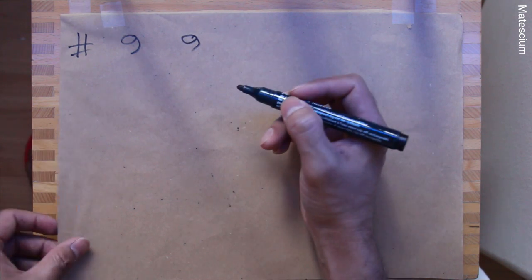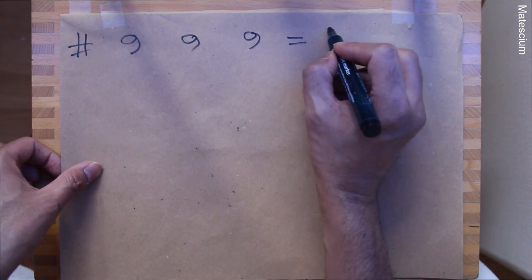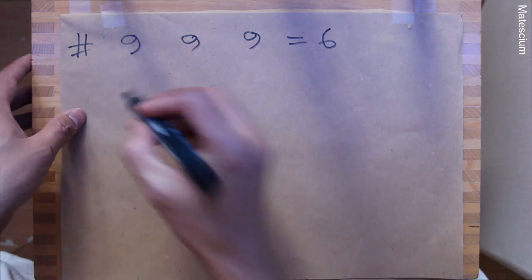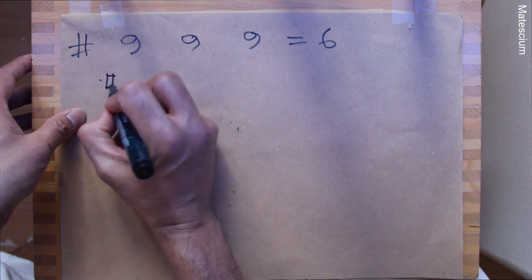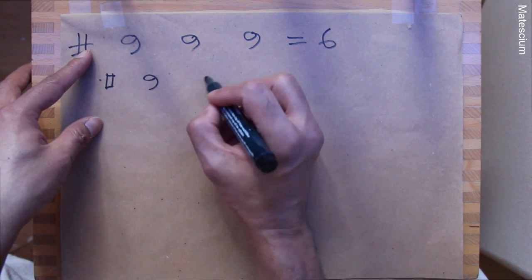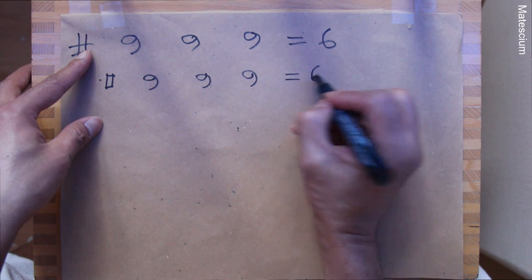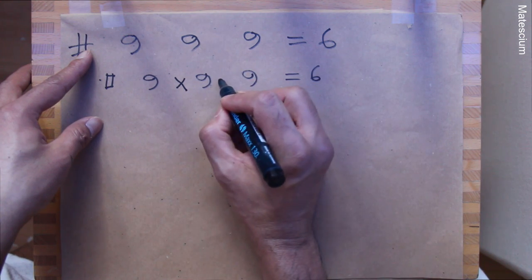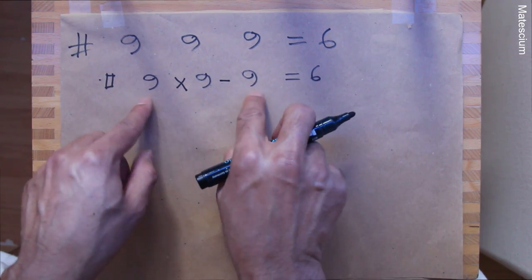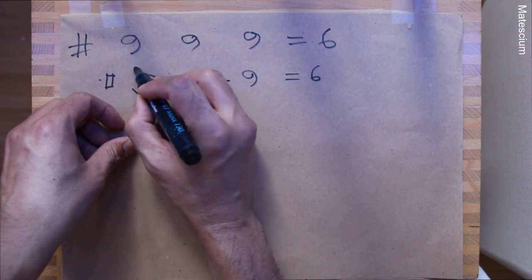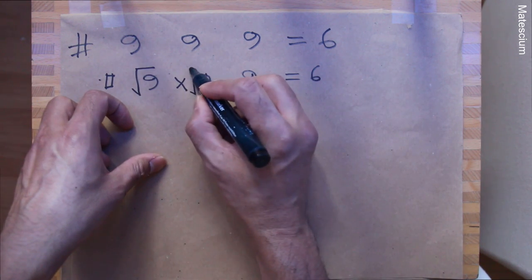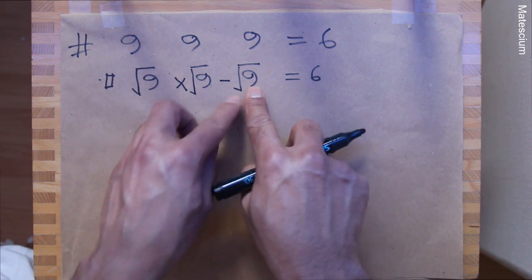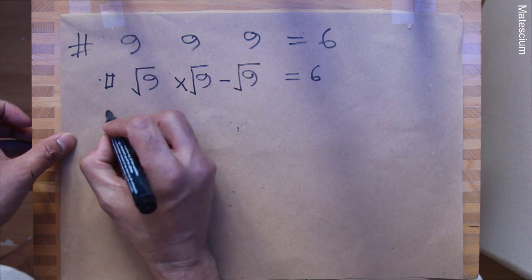Nine, nine, nine, and nine equals six. There are three possible solutions. First: I introduce a multiplication sign and a minus sign — that's not enough. I introduce a square root here, another square root here, another square root here, and another square root here. That means the square root of nine is three, times three, minus three equals six. This is one possible solution.